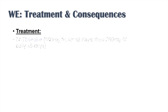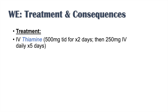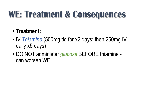Treatment of Wernicke's encephalopathy is essentially thiamine replacement. We give high-dose IV thiamine, with higher amounts in the first couple of days followed by lower amounts later. A critically important point: do not administer glucose before thiamine, as doing so can actually worsen Wernicke's encephalopathy. Glucose may be given, but only after thiamine. Giving glucose first worsens the condition because without thiamine those key enzymes — transketolase, alpha-ketoglutarate dehydrogenase, and pyruvate dehydrogenase — cannot function. Always give thiamine before glucose.